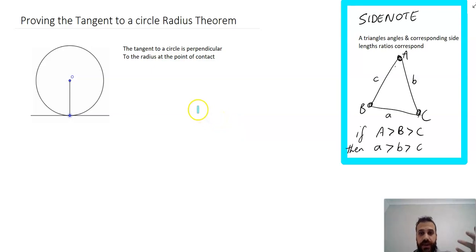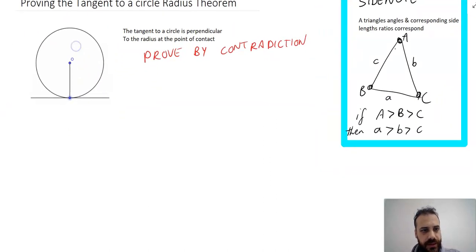Now we'll use proof by contradiction, which is really clever. If you're trying to prove something, assume it's untrue and work through that. If it falls apart, then the original idea must be true. We need to assume the tangent is not perpendicular to the radius. If this angle isn't 90 degrees, there must be some other line from point O to the tangent that makes a right angle. Let's draw a random point and assume that makes a right angle.